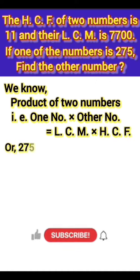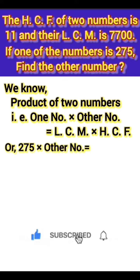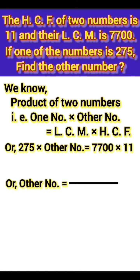So, 275 times other number equals LCM 7700 times HCF 11. Or, other number equals 7700 times 11 divided by 275.